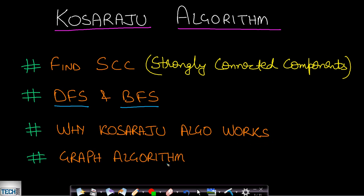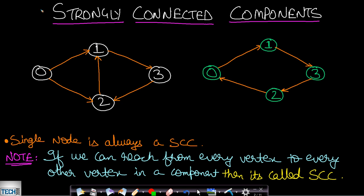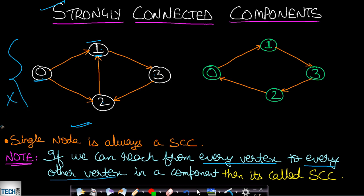The first concept is: what is a strongly connected component? Well, if we can reach from every vertex to every other vertex in a component, then that component is said to be a strongly connected component. In this first graph, we have a single component. Starting from node 0 we can reach 1, 3, and 2, but starting from node 1 there is no path to reach node 0. Since there is at least one pair of vertices with no path between them, this component is not a strongly connected component.